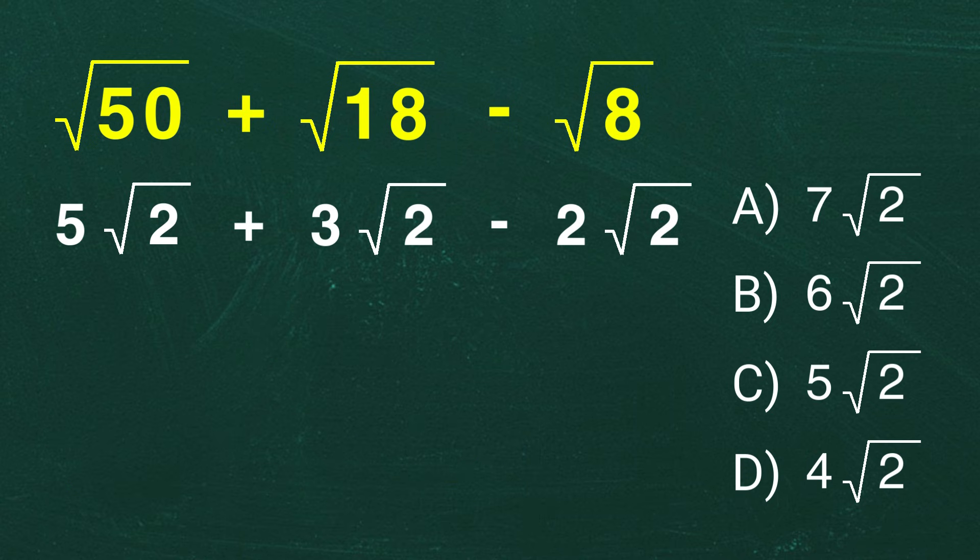Now, we can rewrite the original problem with these simplified terms. Next, let's combine the terms. Since all the terms involve root 2, we treat it like a common factor. Imagine adding 5x plus 3x minus 2x, where x is the common factor. That would give you 6x, right? Same idea here. So, this becomes 6 root 2.